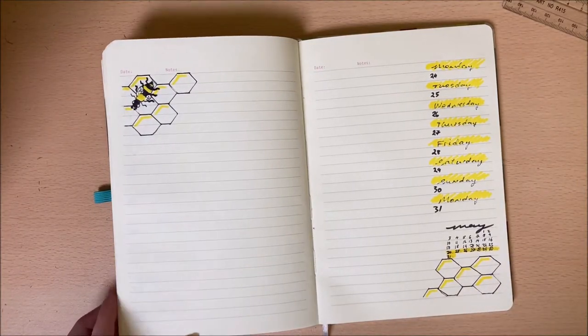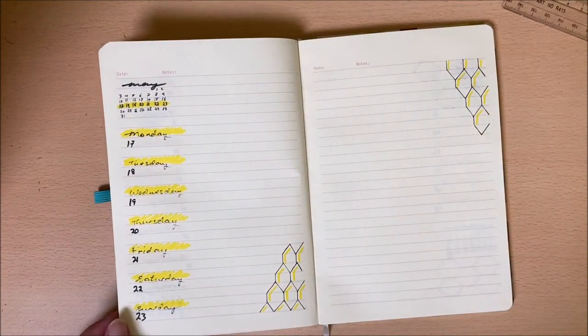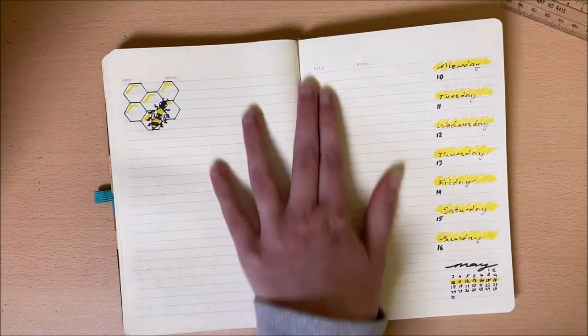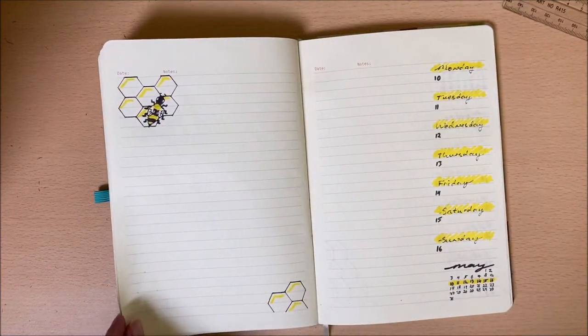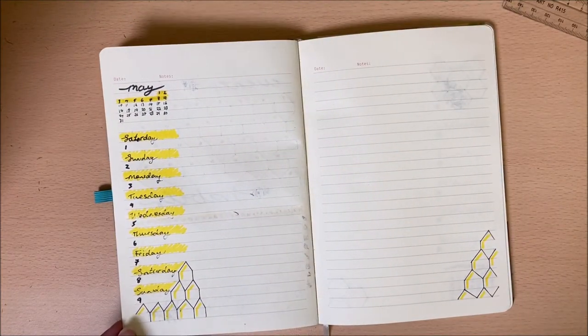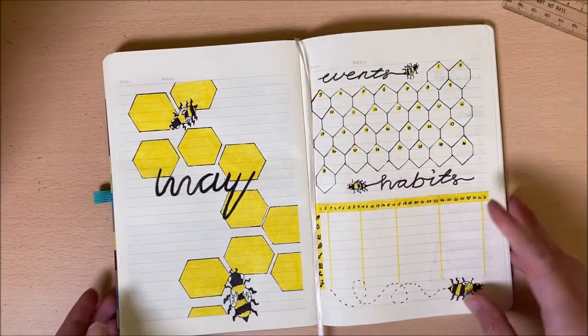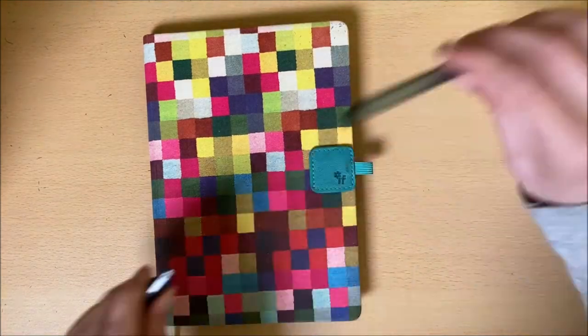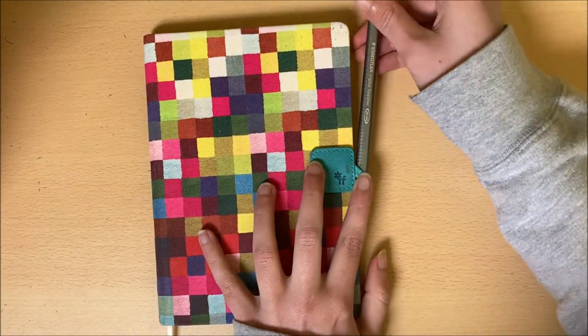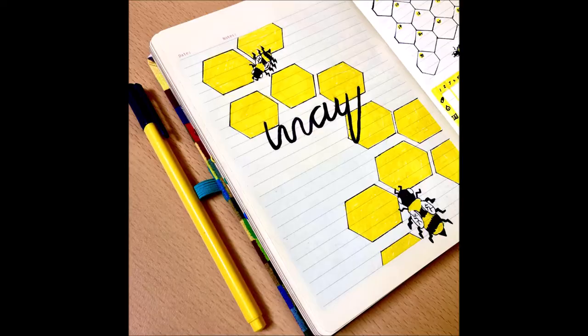And that is it for this week's video. Here is a quick overview of how the final monthly layout for May looks like. I hope you guys enjoyed the spread. Please like and comment on the ideas you have for future videos down below. And please, please, please smash that subscribe button. I update new videos every two weeks and I will talk to you guys then.